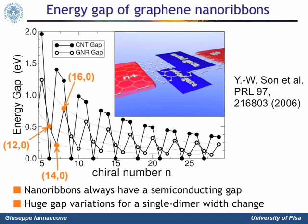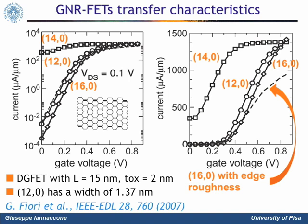However, the gap has huge variations if the number of dimer lines in the width direction changes only by one. For example, let us consider the three nanoribbons indicated in orange — in all cases the width is smaller than 2 nanometers. You see the large variation of the energy gap. We are interested in evaluating the effect of this variation on the electrical characteristics of a double-gate FET with a nanoribbon channel, gate length of 50 nanometers, and oxide thickness of just 2 nanometers. The nanoribbon with the smallest gap — the 14-0 — is associated with the lowest threshold voltage, but above all, with very poor subthreshold behavior. In practice, the device cannot be switched off. In this case, edge roughness can be of help, because it effectively averages over different widths.